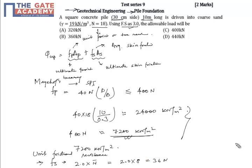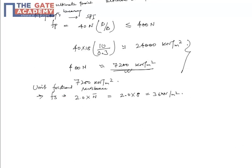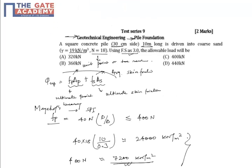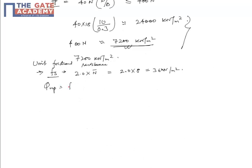Again, putting the value of F_S and F_P in this equation, we get Q_UP is equal to F_S A_S plus F_P A_P. Putting the value, we get 7,200 into 0.3 into 0.3, that is end bearing, plus this is for this one.